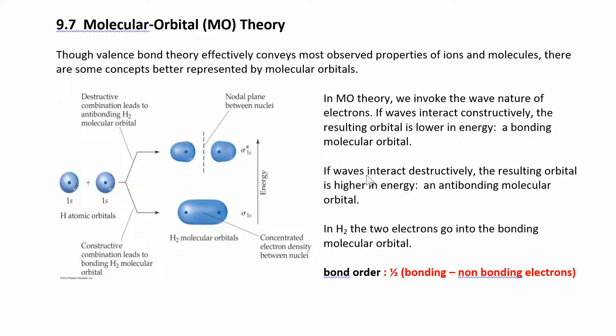When waves interact, they can interact constructively or destructively. Constructively, when you add two waves together, they get lower in energy. With destructive interference, the energy gets higher. For bonding, a bond happens when orbitals combine in a constructive manner so that the energy is lower. An antibonding orbital is when the overlap happens and it's higher in energy.